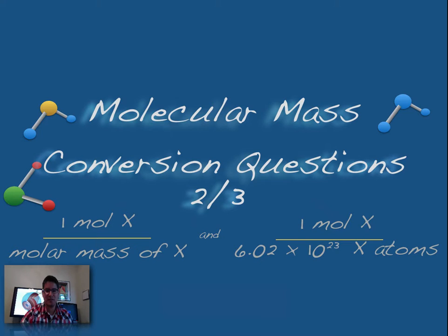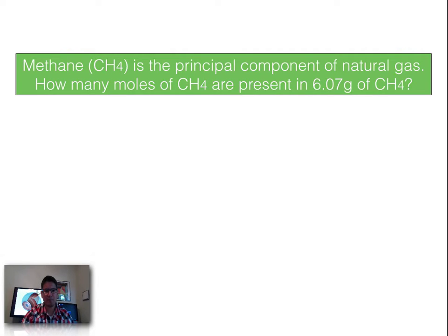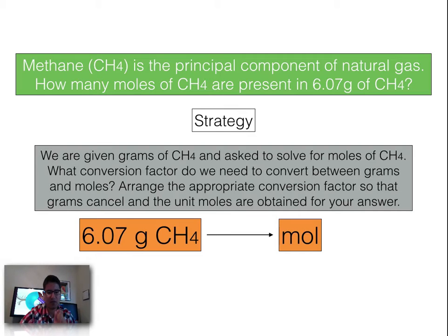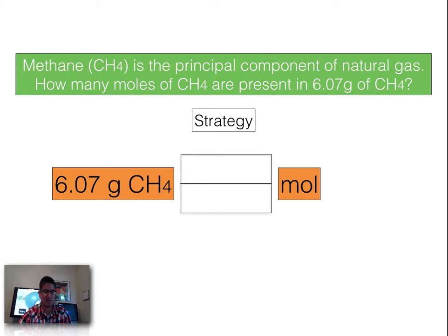Let's move on to the second question. Methane gas, CH₄, is a principal component of natural gas. The question is: how many moles of CH₄ are present in 6.07 grams of methane? My strategy is to identify my givens — 6.07 grams of methane — and I'm asked to solve for moles. I want to convert grams of methane into moles of methane by arranging the appropriate conversion factor so that grams cancel and moles are obtained.